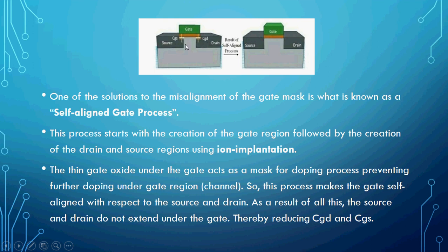Due to these capacitances, the switching speed of the transistor may vary — it may increase by 10 to 20 percent or reduce by 10 to 20 percent. We need to resolve this problem. If we use aluminium, this problem will compulsorily happen. That is the main reason they moved to polysilicon as a gate material. The self-aligned gate process is the best method to avoid the CGS and CGD problem.